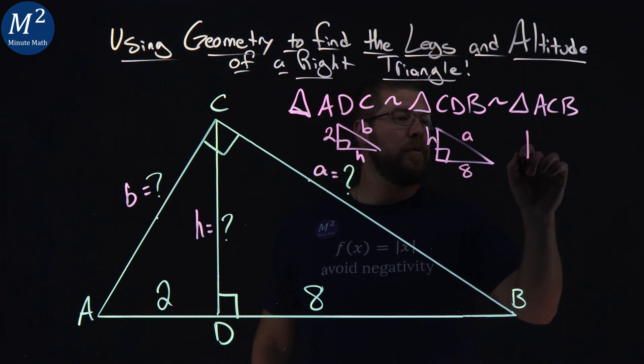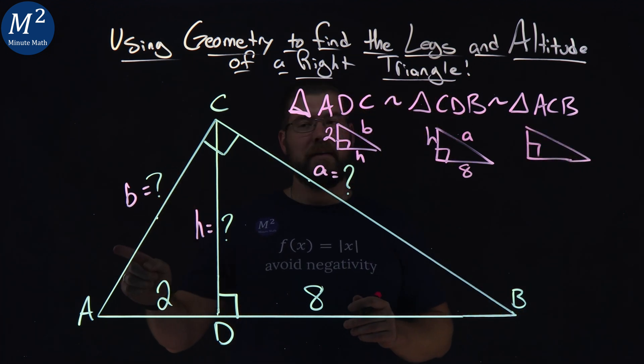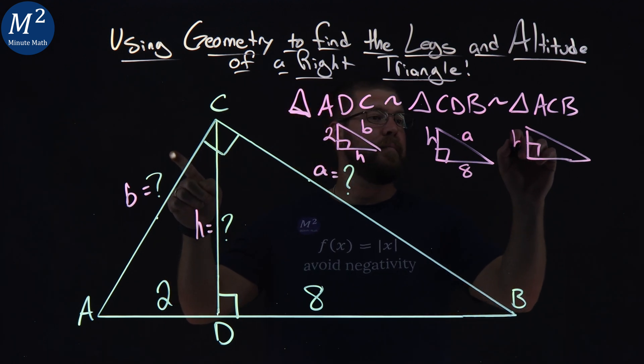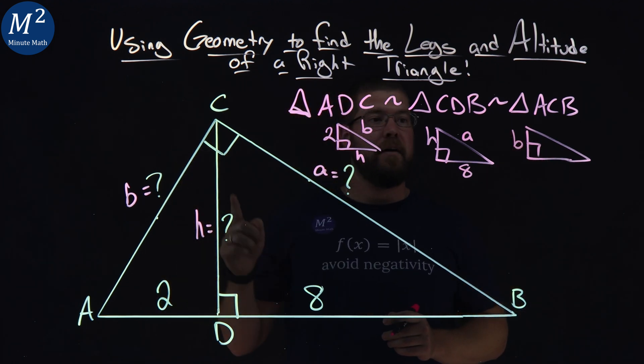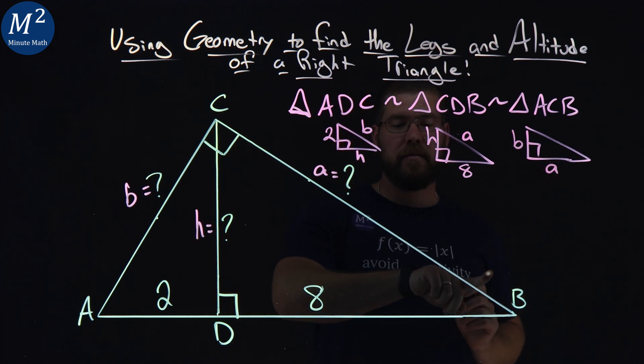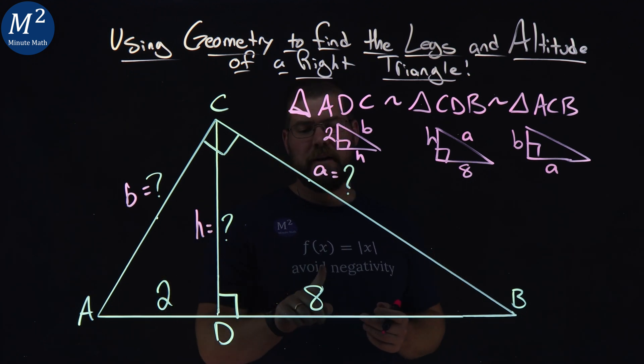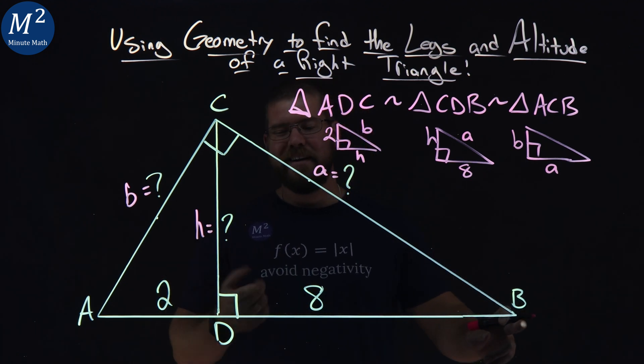And then the large triangle, we have little leg, big leg here. Little leg is AC, which is b. Then we have the long leg, which is CB, which is a in this case here. And then the hypotenuse, actually pretty easy, 2 and 8 right there for BC is 10.